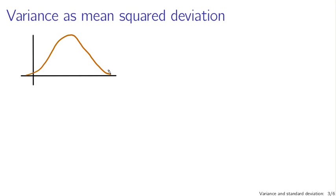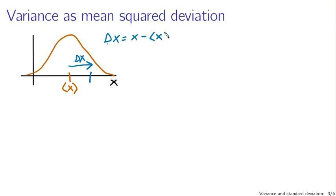Suppose this is my distribution. The mean of my distribution is going to fall roughly in the middle — that's the expected value of x. Now if I draw a random number from this distribution, I won't always get the expected value. If I'm interested in the typical deviation of this value from the mean, that will tell me something about how broad the distribution is. Let's define this displacement as delta x, equal to x minus the expected value of x. You might think: let's just try the expected value of delta x. But unfortunately, delta x is positive on one side of the mean and negative on the other, so the expected value of delta x is zero.